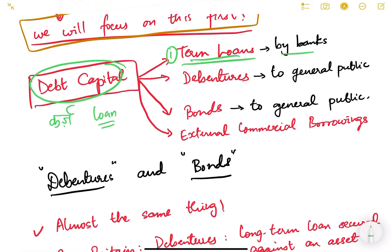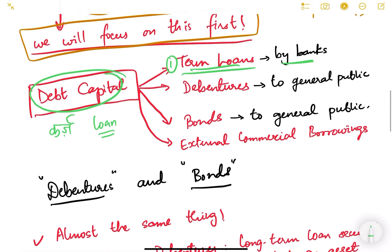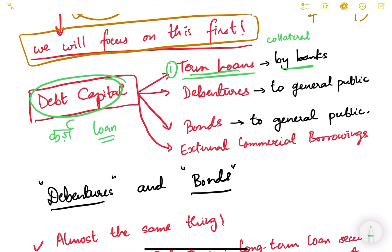The first type is term loans, which you take from a bank. For example, if you want to start a new business, you approach a bank with some collateral — land, building, gold, or anything — and say you need a loan of 50 lakh rupees. The bank gives you this loan, and you repay it in fixed installments over a given number of years, say 20 years. That is known as a term loan.